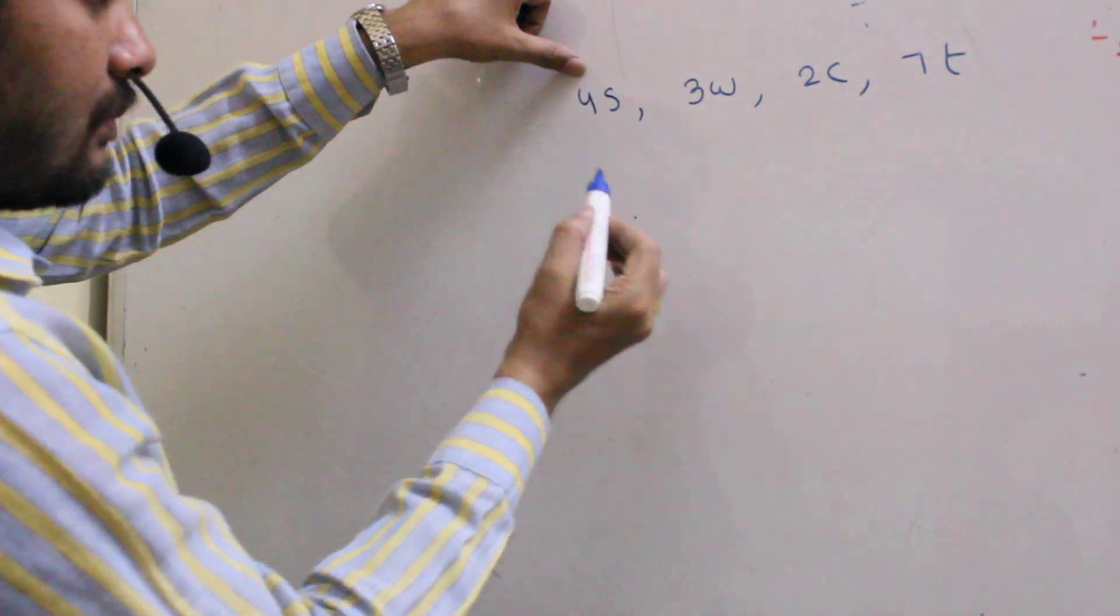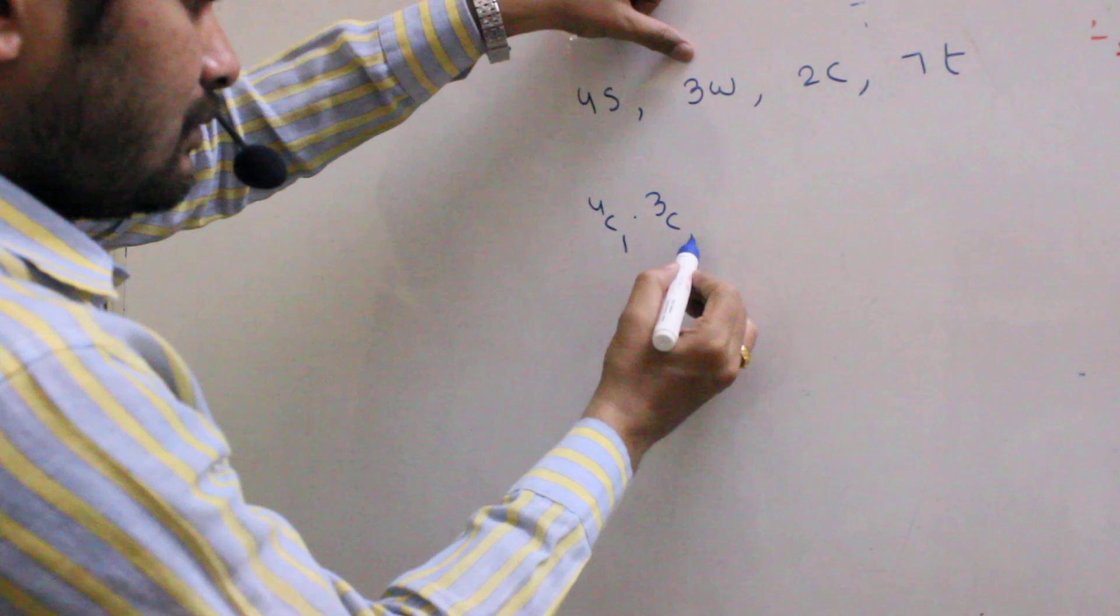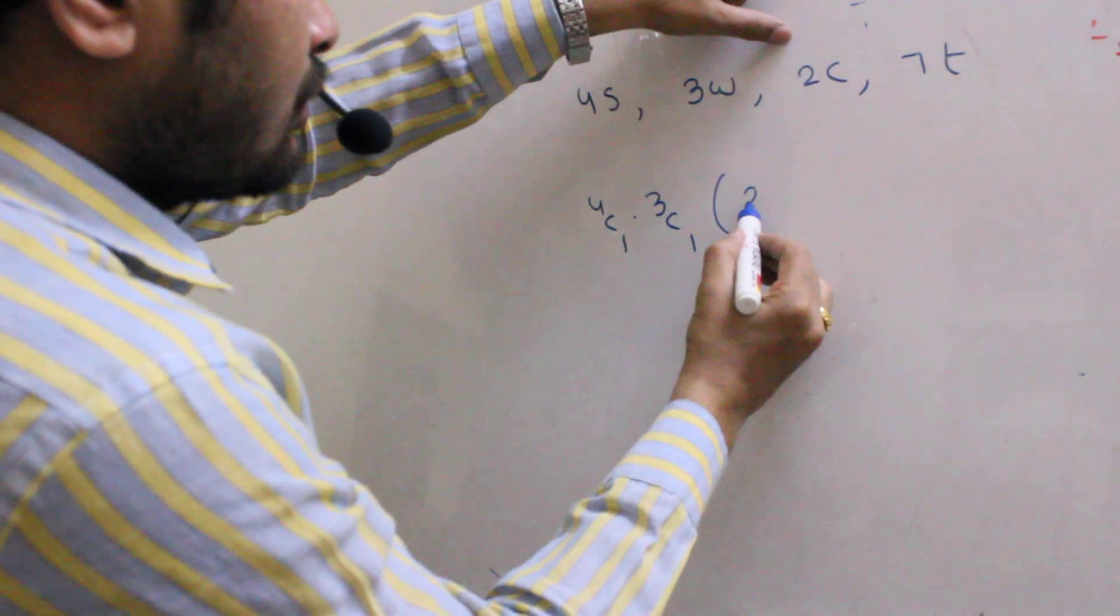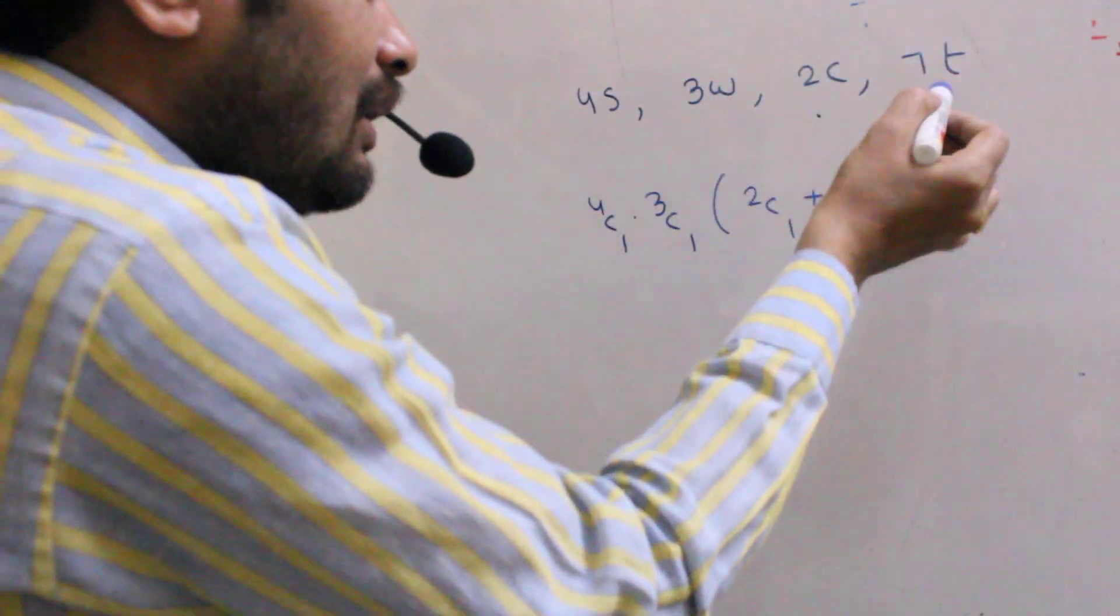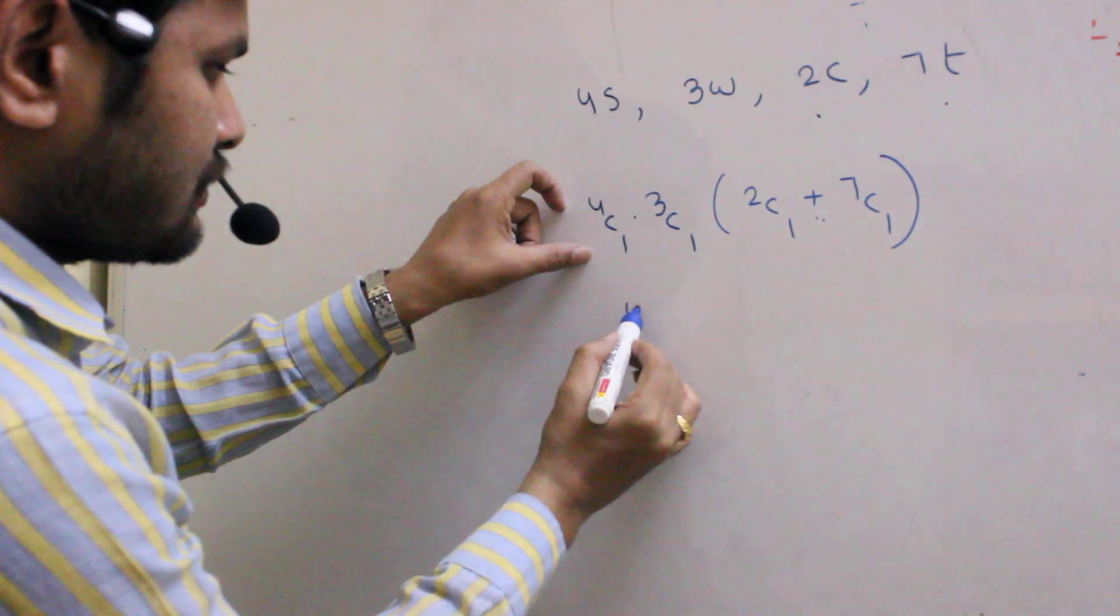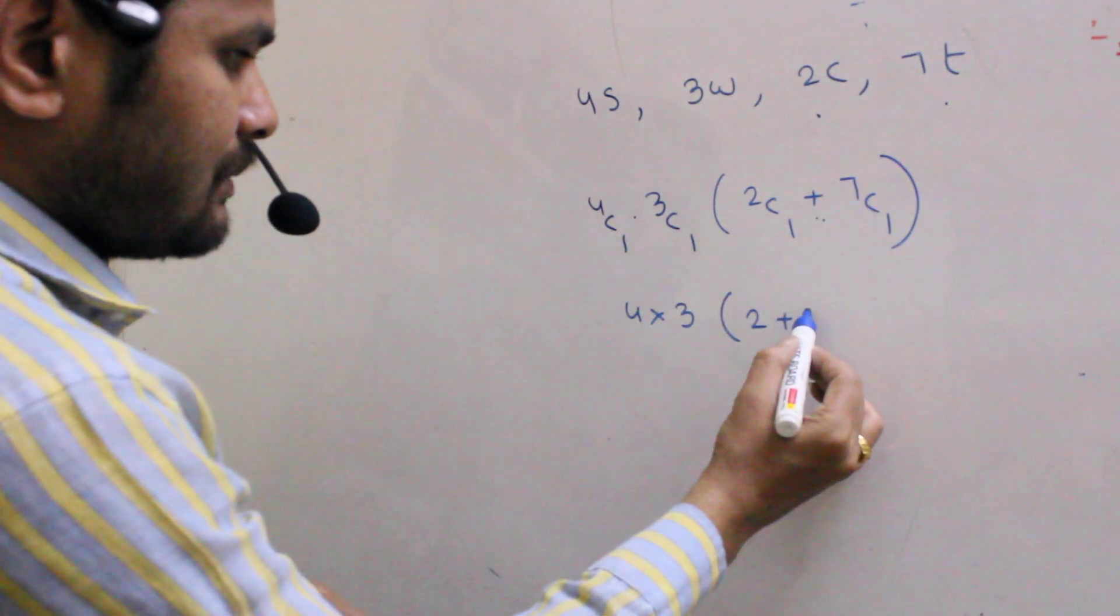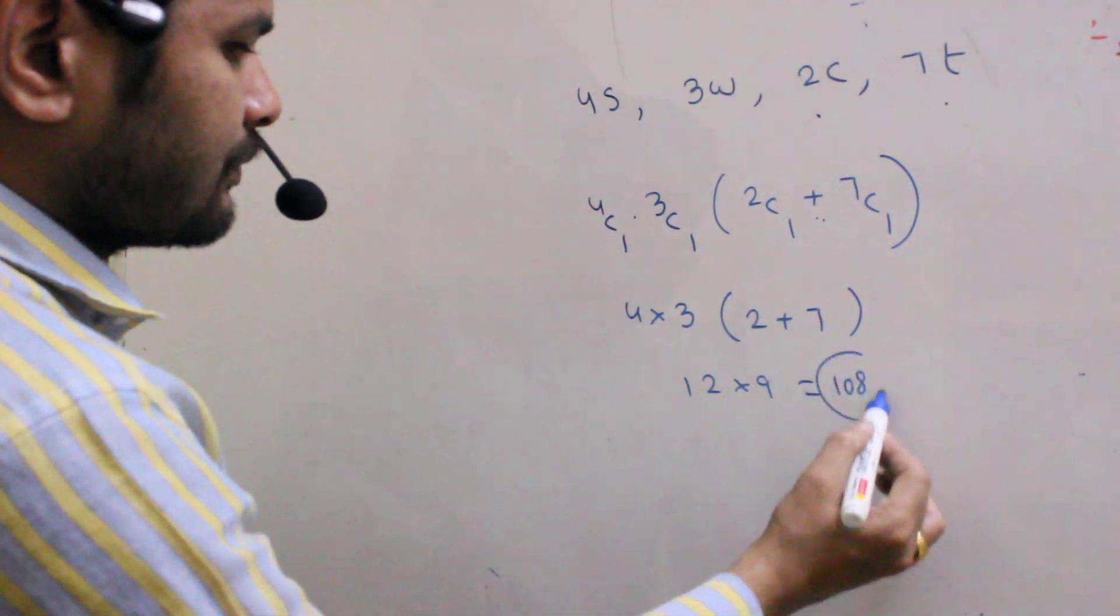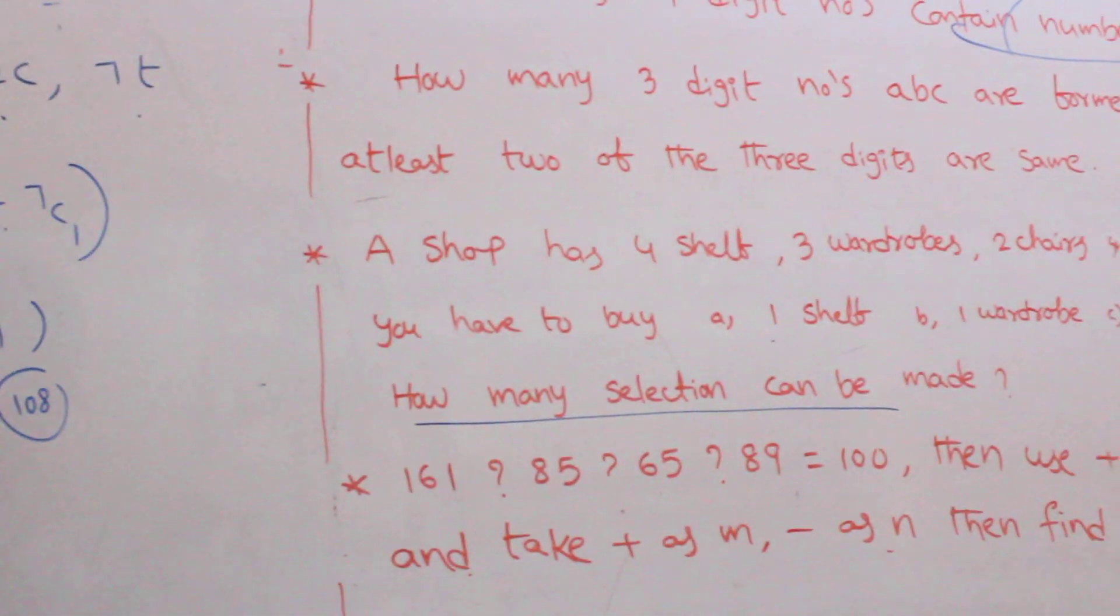But our condition is 1 shelf, that means 4C1. 1 wardrobe, 3C1. Next one, either one chair or one table, 2C1 plus 7C1. Either one chair or one table, that means either or means plus. 4C1 means 4, 3C1 means 3, 2C1 means 2, 7C1 means 7. That equals 12 into 9, 108. What is the answer? 108.